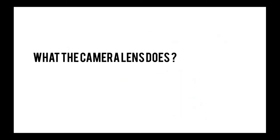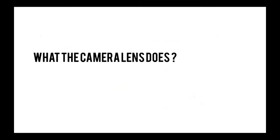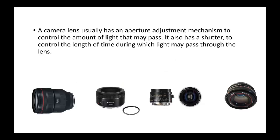All cameras have a lens — even our iPhones, which now have three different lenses giving different results. A camera lens has an aperture adjustment mechanism to control the amount of light passing through, and a shutter to control the length of time during which light may pass. With different lenses and settings, we control how much light enters, and how dark, bright, or sharp our pictures are.